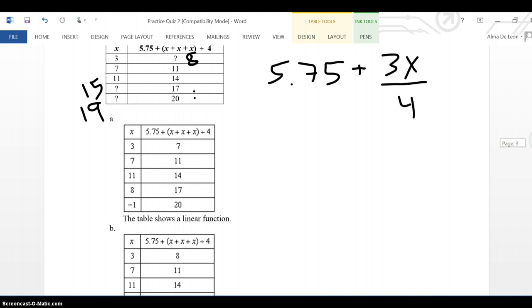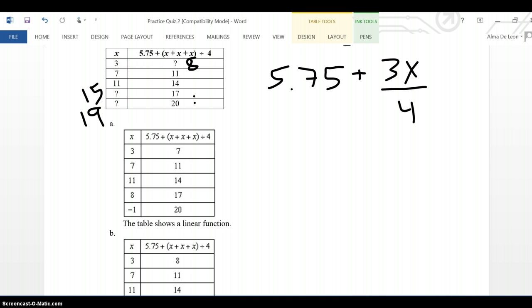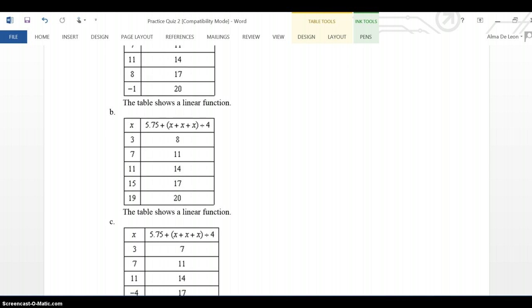And right away, I can see a is wrong because the first number should be 8, not 7. So a is wrong. B has 8, 15, and 20, which are the numbers I need.